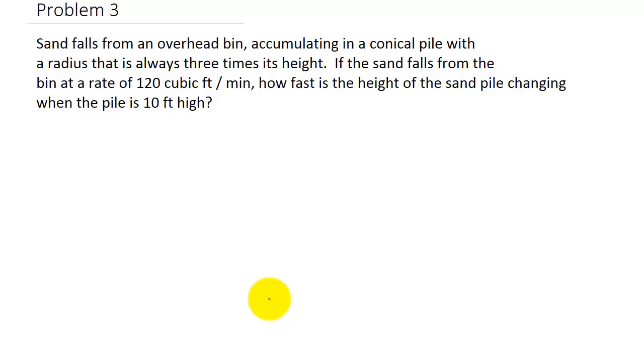It says that sand falls from an overhead bin accumulating in a conical pile with a radius that is always three times its height. If the sand falls from the bin at a rate of 120 cubic feet per minute, how fast is the height of the sand pile changing when the pile is 10 feet high?